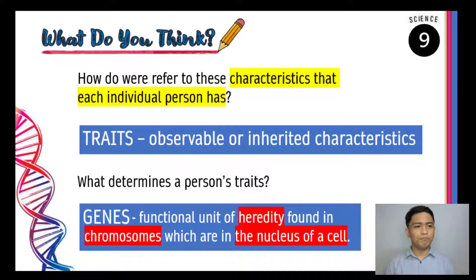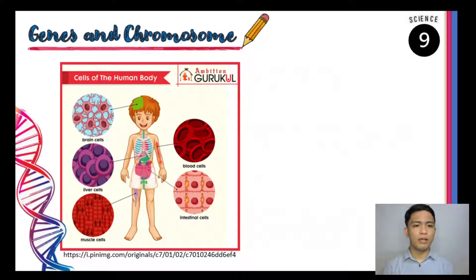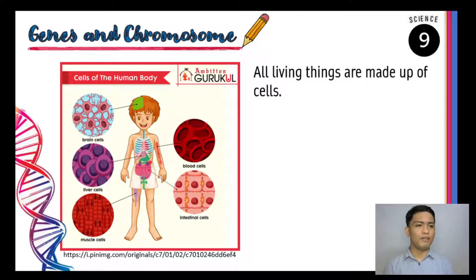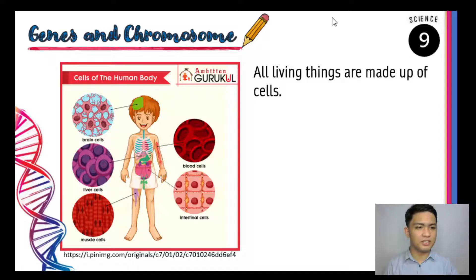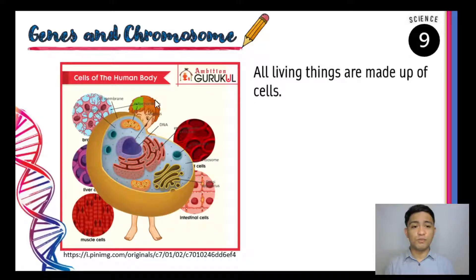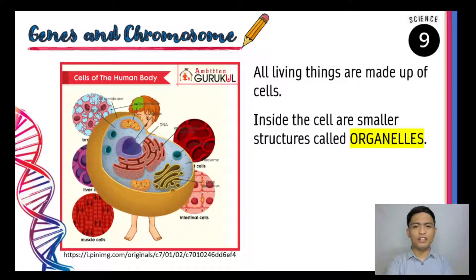It may be a bit difficult to understand, so let's go back to the concept of the cell. Take a look at this picture. We human beings are made up of cells — that's one requirement for all living things. We are multicellular, made up of billions of cells: brain cells, liver cells, muscle cells, blood cells, intestinal cells, and many other types. These cells are made up of much smaller structures called organelles. From the earlier definition of genes, the organelle mentioned was the nucleus.